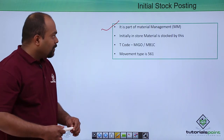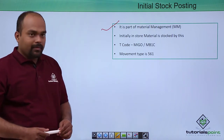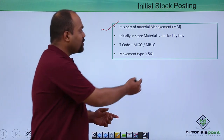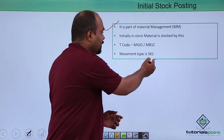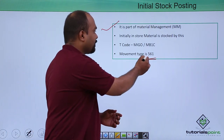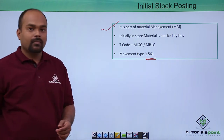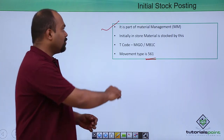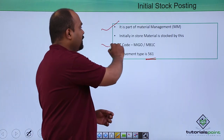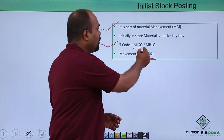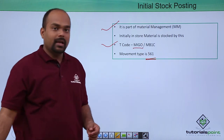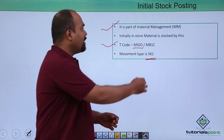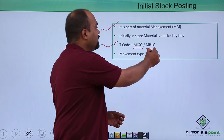The movement type we will use for initial stock posting is 561. And the transaction code is MIGO or MB1C.